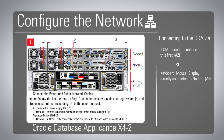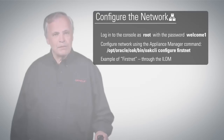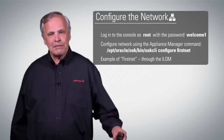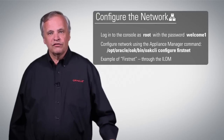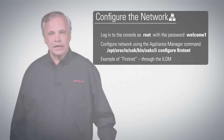The command is oakcli configure firstnet. It will then ask you several questions so that it can establish the right IP addresses for that database appliance so that you can get to it. Let me go to the computer now — we have a demo of configuring the first net.